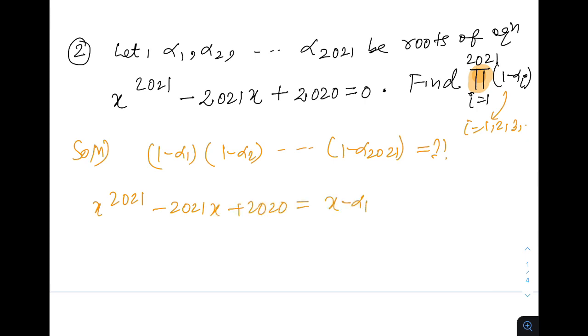So I can tell x minus alpha 1 is a factor because if I put alpha 1 I will get this expression 0. So we must have something like x minus alpha 1 so that if I insert alpha 1, alpha 1 minus alpha 1 equals 0. With the same logic we will have x minus alpha 2 up to x minus alpha 2021.